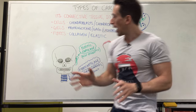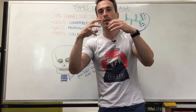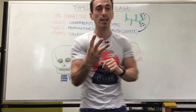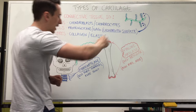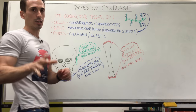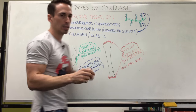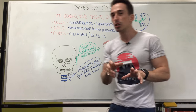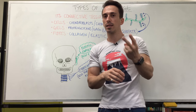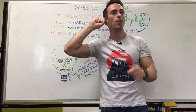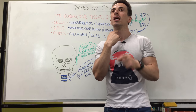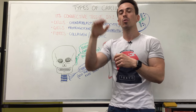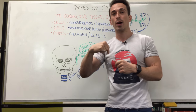There are three types of cartilage: elastic cartilage, fibrocartilage, and hyaline cartilage. Elastic cartilage simply has high amounts of elastic tissue and is found in only two places — the external ear and the epiglottis. The epiglottis is that little cartilaginous flap that sits over the top of the trachea so that we don't bring water and food into our airways.